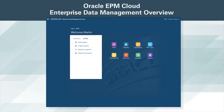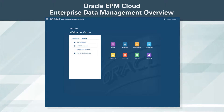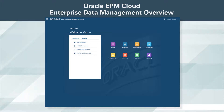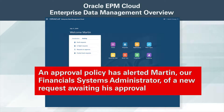We are opening a new office in Peru this fall, and a request has been submitted for the company segment in our corporate general ledger. An approval policy has alerted Martin, our financial systems administrator, of a new request awaiting his approval.